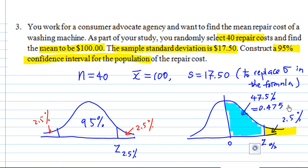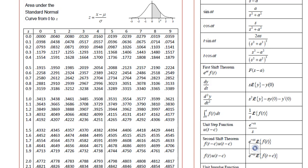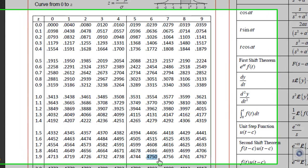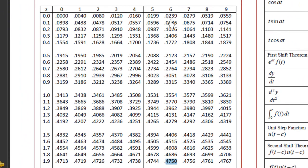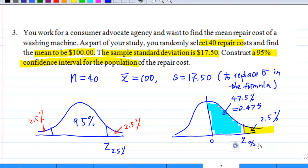And if this area is 0.475, let's look at the table now. Looking for 0.475, you get this number and this is 1.96. 1.96 for a 95% confidence interval, 1.96 from the table.